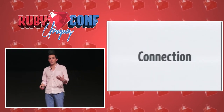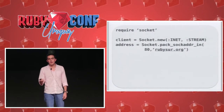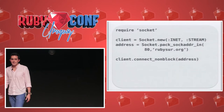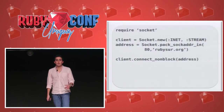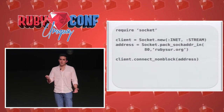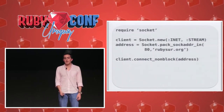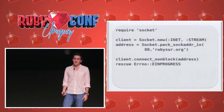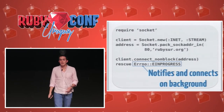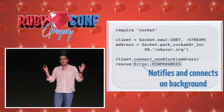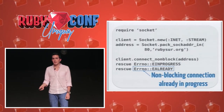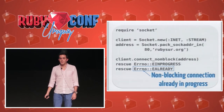For a non-blocking connection, we have a method called connect_nonblock(). We send it the address we want to connect to. There are two important exceptions: the first is Errno::EINPROGRESS, which notifies that the connection is being made in the background without blocking. The second is Errno::EALREADY, which means a non-blocking connection is already in progress.